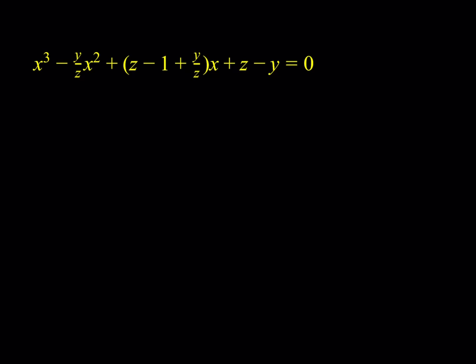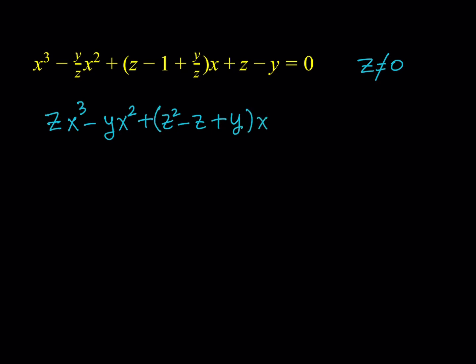The first thing I want you to notice is that we have some fractions and there's a z in the denominator, and obviously we don't want z to be zero. So let's go ahead and write that down: z does not equal zero. And with that condition, I can just go ahead and multiply both sides by z to get rid of the fractions.